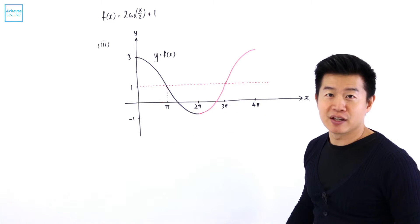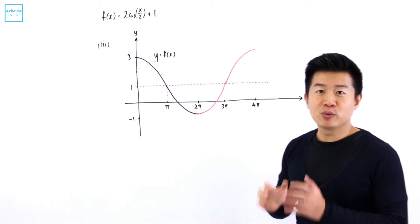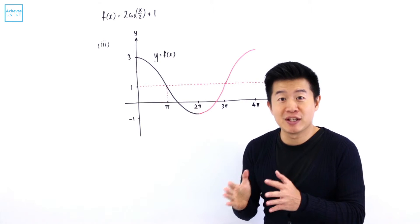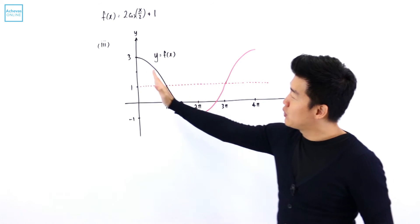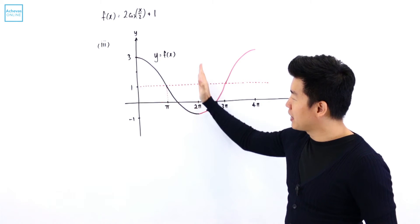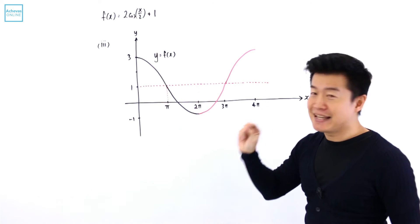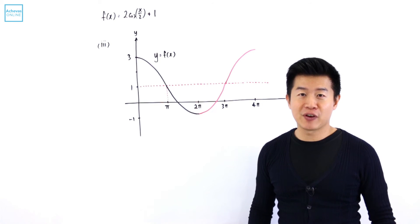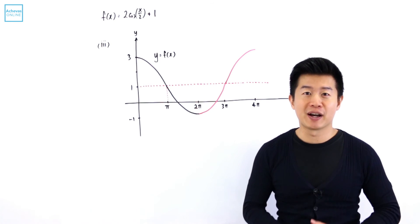But according to the question, we are supposed to display the graph only from x between 0 to 2π. That is why, from here until 2π, this black colored region is the graph you are supposed to display in your solution. This will represent the graph of y equals f(x) when x is from 0 to 2π.